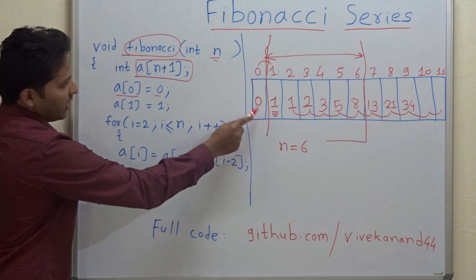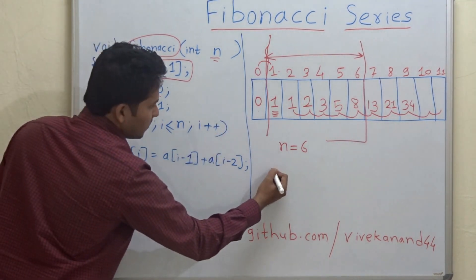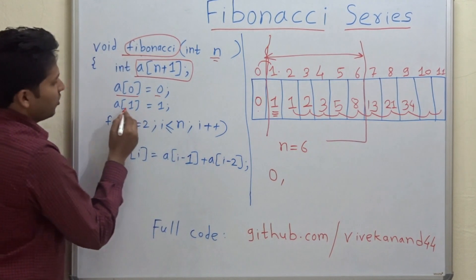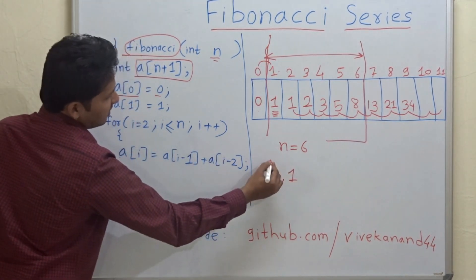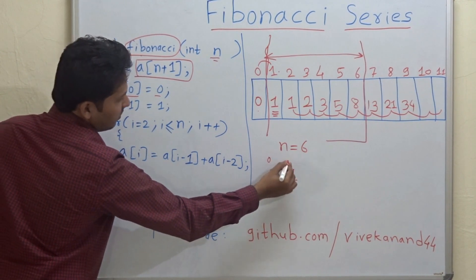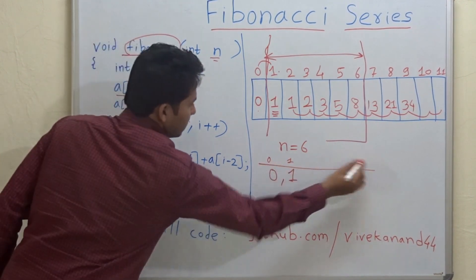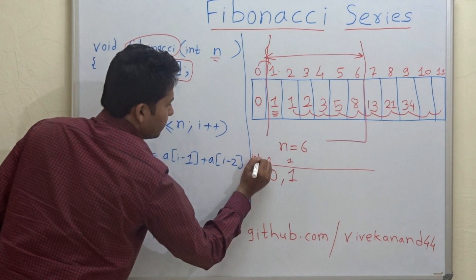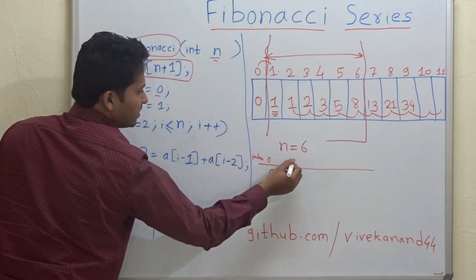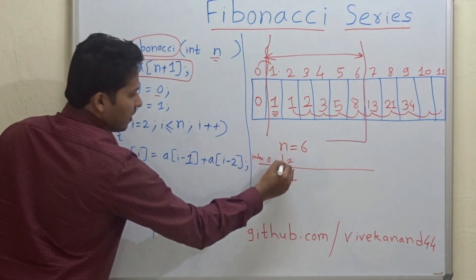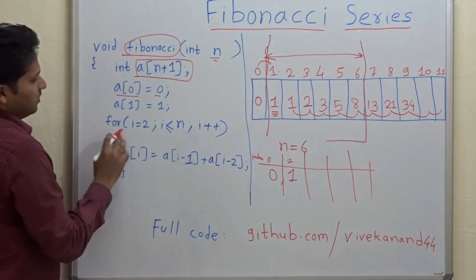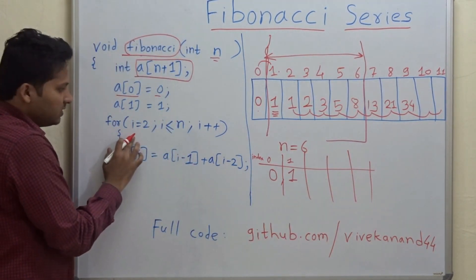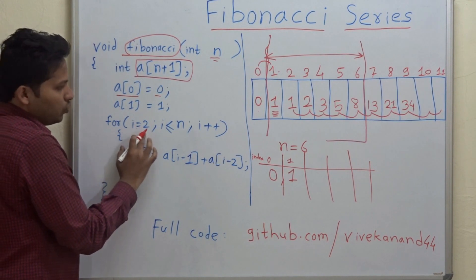So let us see now: a[0] equals 0, as you know, and a[1] is equal to 1. So these are the first two elements in the array. This is index 0, index 1. So I will write index here: index 0 and 1.